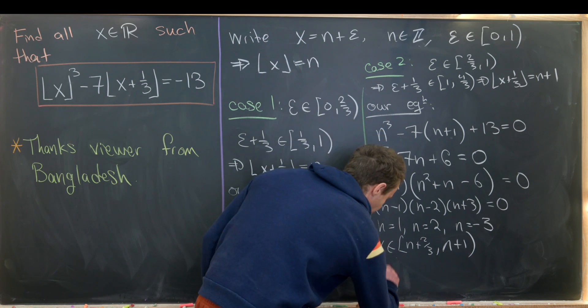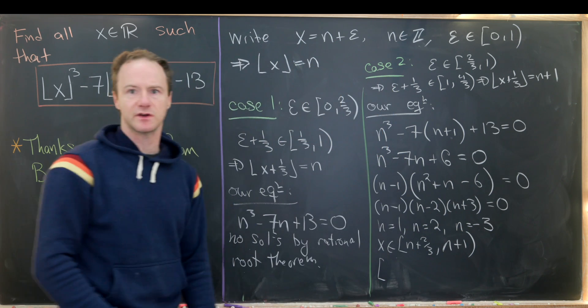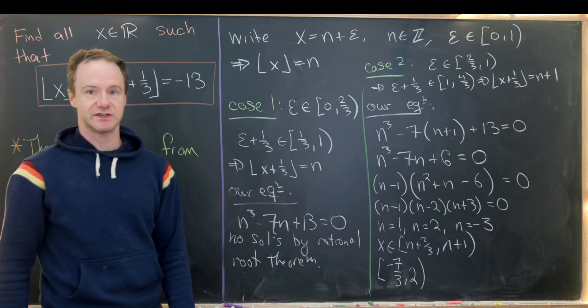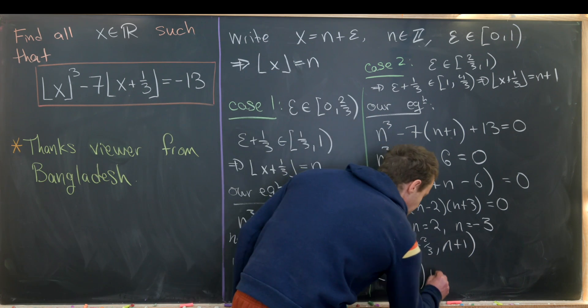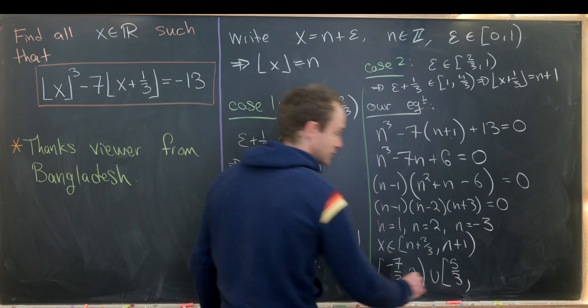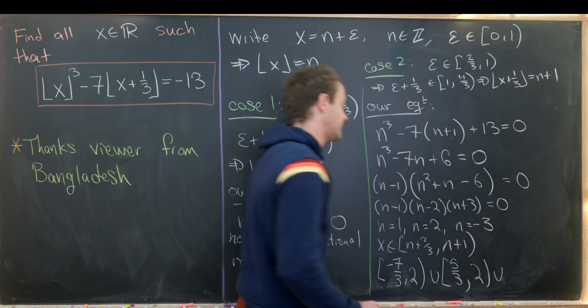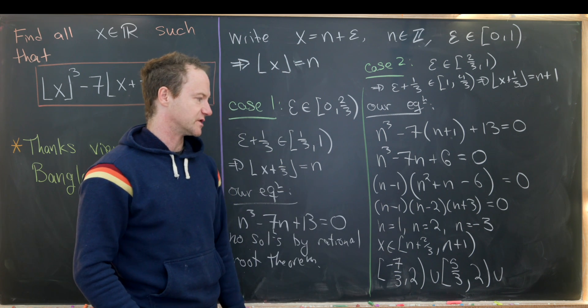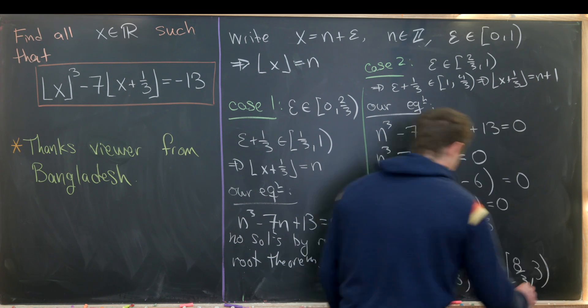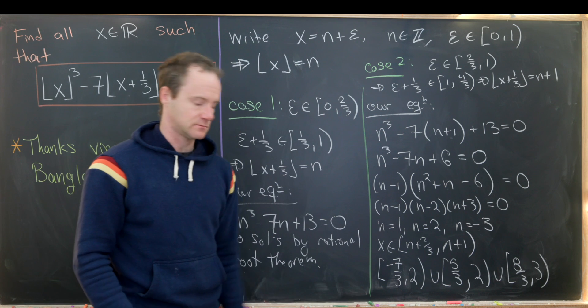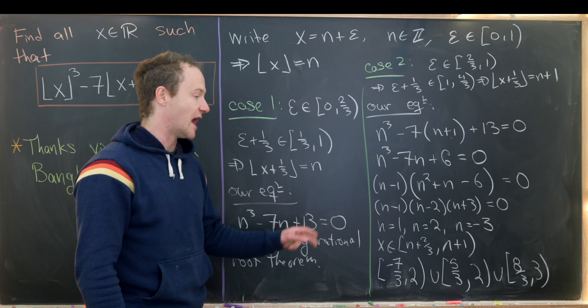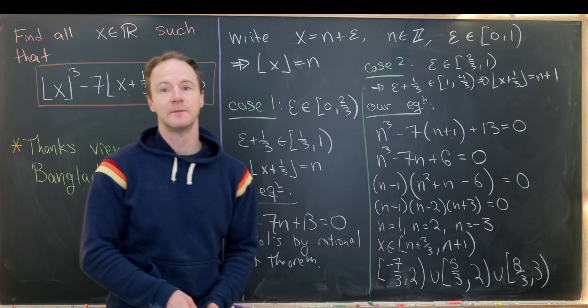We'll work from the smallest. So that first one is going to be negative 3 plus two-thirds. So that's going to be negative seven-thirds. So we have negative seven-thirds up to negative 2, not including negative 2. And then union, what we get from n equals 1. So that's going to be five-thirds up to 2, not including 2. And then finally, union what we get from n equals 2. So that's going to be eight-thirds up to 3. So in the end, this disjoint union of half open, half closed intervals represents our solution set for our given equation. And that's a good place to stop.